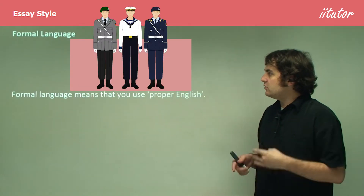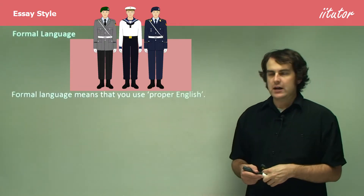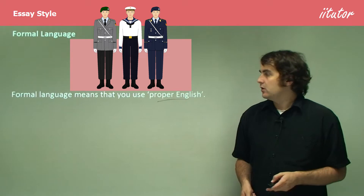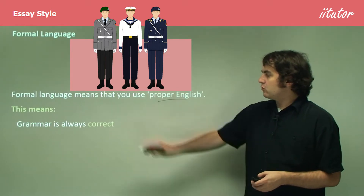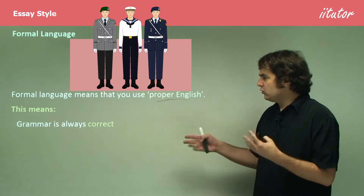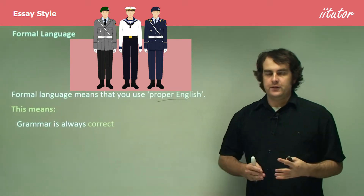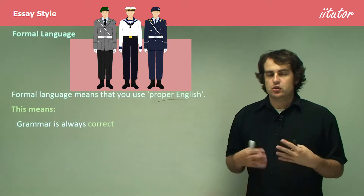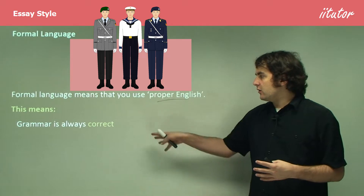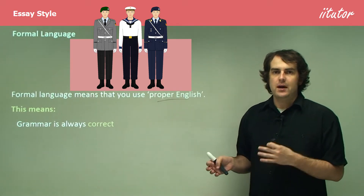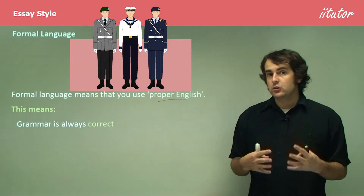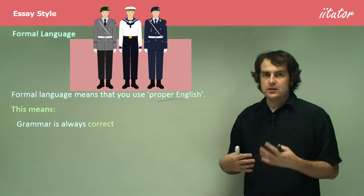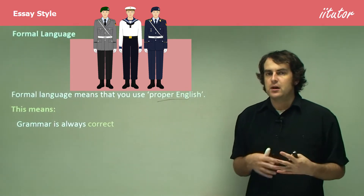To start with, you need to use something called formal language, which essentially just means proper English. What are the rules of proper English? Well, to start with, it means that your grammar is always correct. If you're struggling with grammar or don't feel confident, it's important that you at least try to write with correct grammar. You're not going to be penalized for every grammatical error, because even really good English speakers still make some grammatical errors from time to time. But you try and use correct grammar as much as possible.